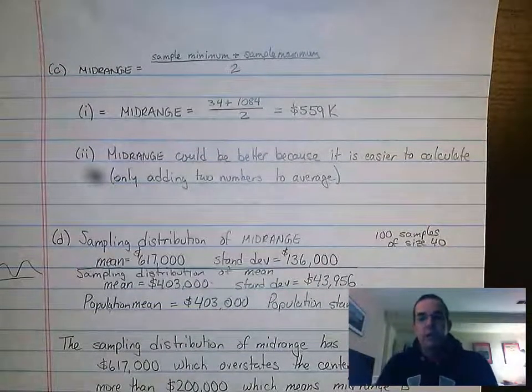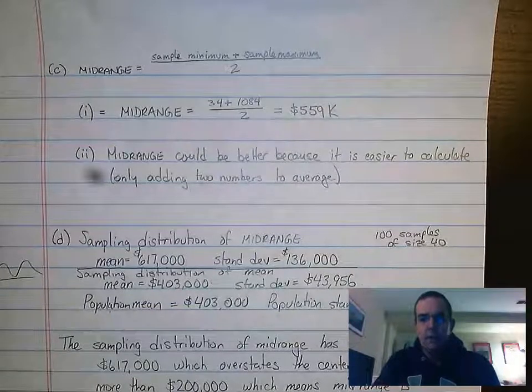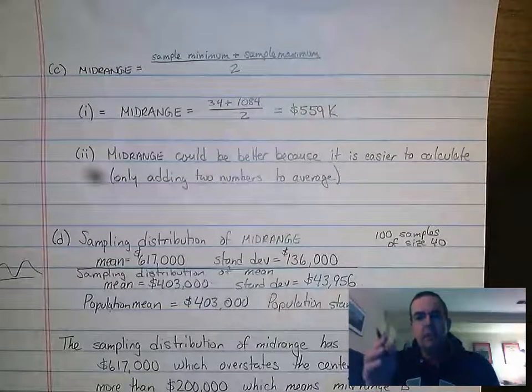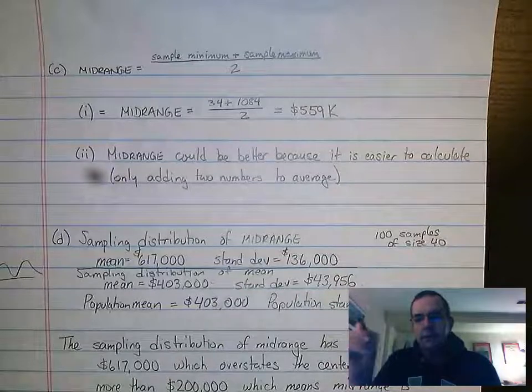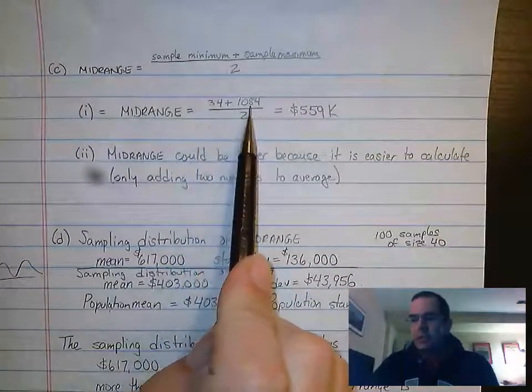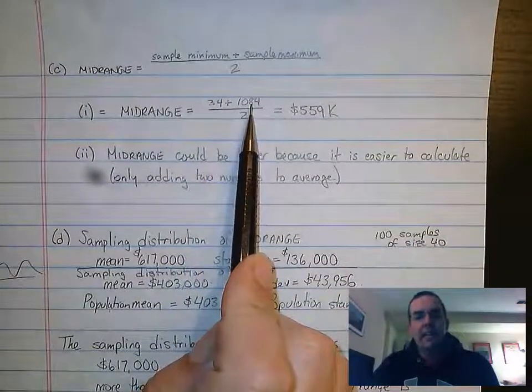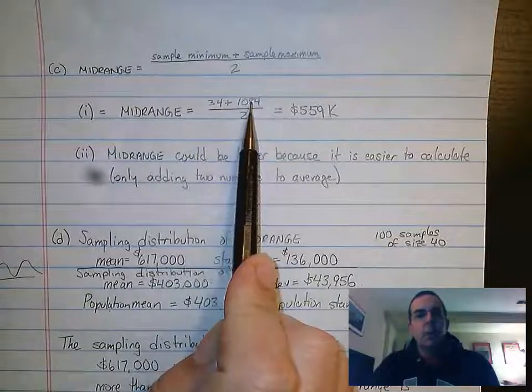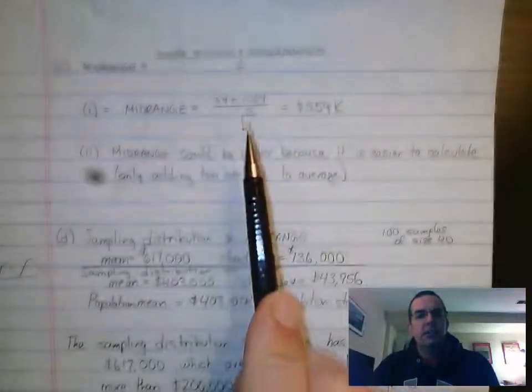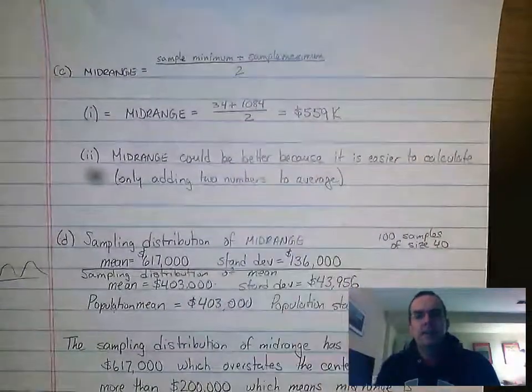So the first question says, for this data set, here's our list of all these home values. We took a sample. Here's the smallest value, $34,000. Here's the largest value, $1,084,000. What we want to find is the mid-range. The mid-range is their average. Their average is $559,000.